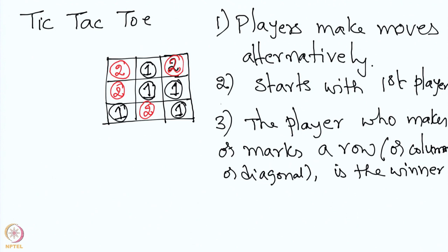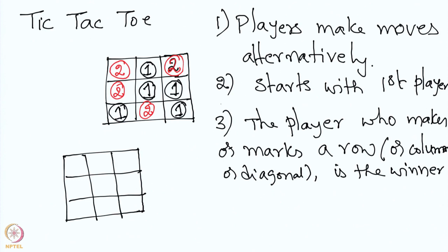Let us look at another instance. Say player one starts making a mark here, then puts here. Player two puts here. Player one is forced to play here. In the next move, player two makes a mark here, but then player one puts here and wins. So in this setup, player one wins.